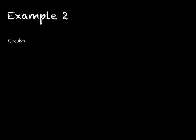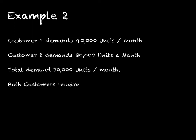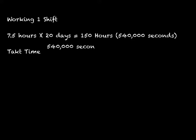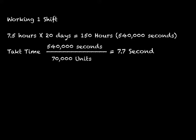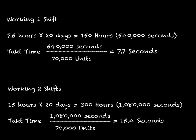Let's do one final example. We now have two customers. The total demand for the month is now 70,000 units, and customers are still requiring one part every 35 seconds. Since the demand has changed, we need to recalculate our takt time. The new takt time would be 7.7 seconds. If the company works two shifts, the available time is greater and dividing by the new demand gives a takt time of 15.4 seconds.